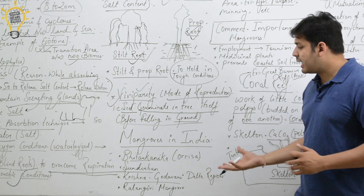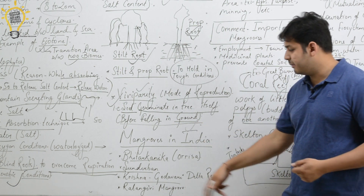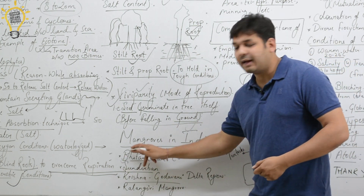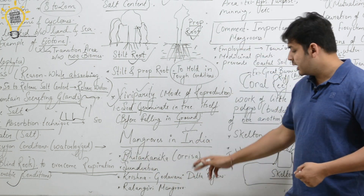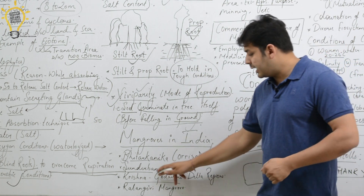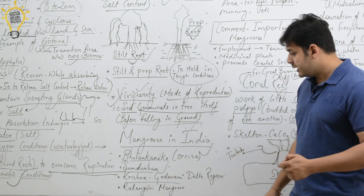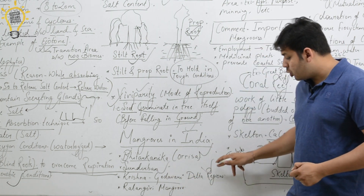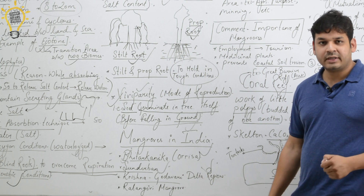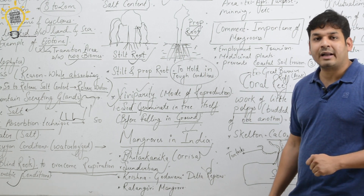Where are mangroves found in India? Famous locations include Bhitarkanika in Odisha, Sundarbans Delta in West Bengal, the Krishna-Godavari Delta, and even the Andaman and Nicobar Islands.